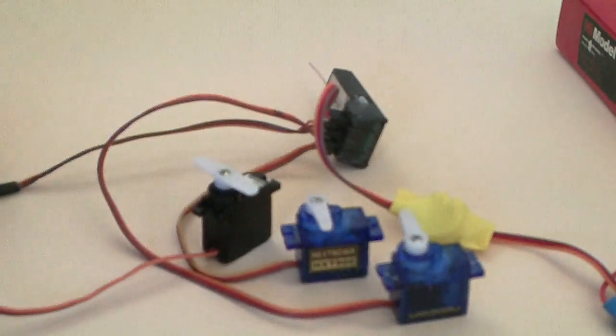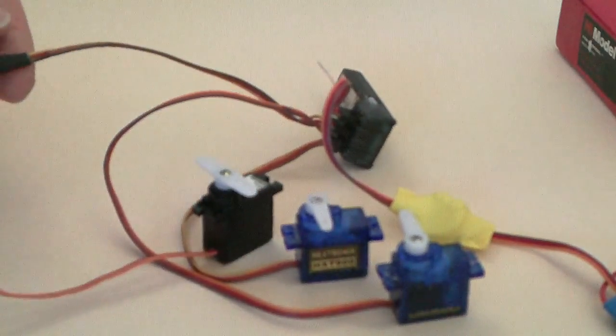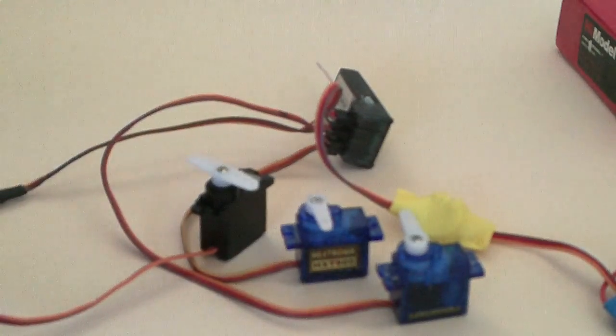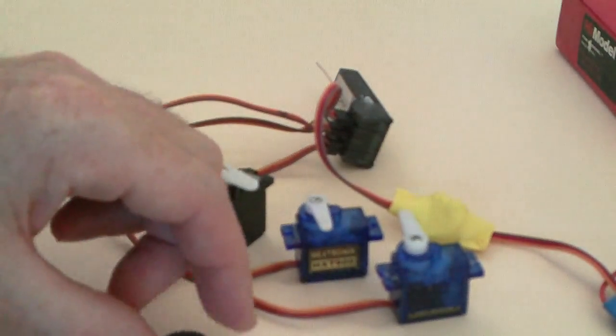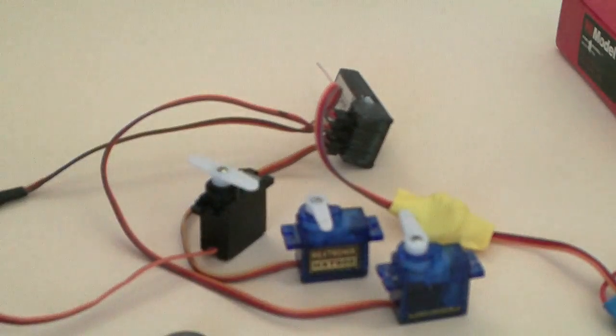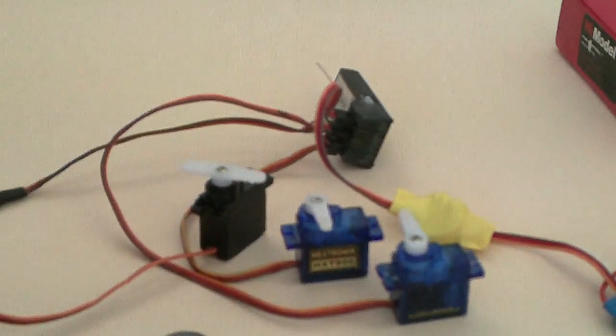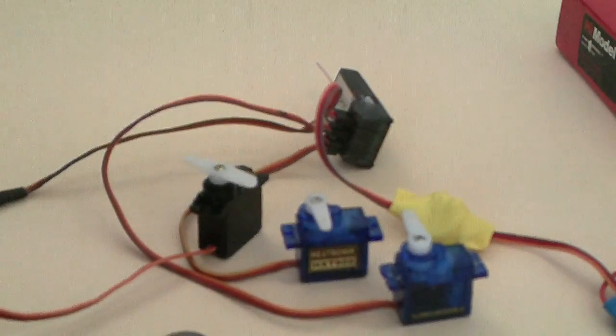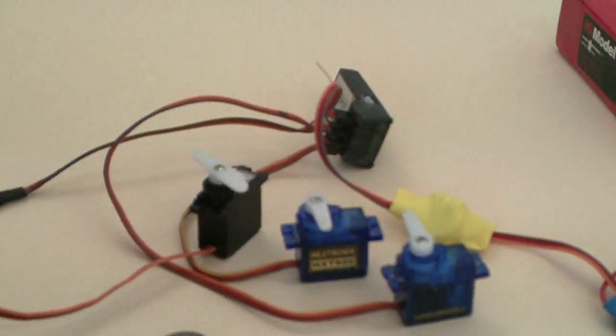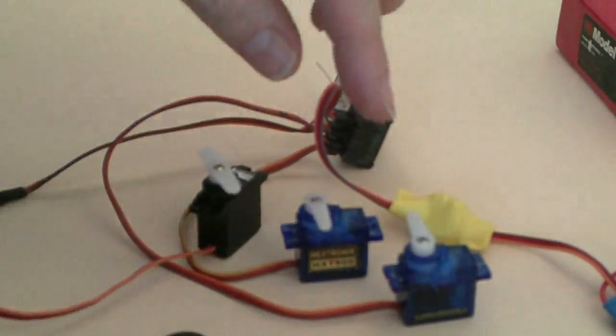We've got a spare ferrite core here. Now the Corona servo is on the rudder, the other two are aileron and elevator. And you can see the servos here are twitching with the movement of the Corona servo.